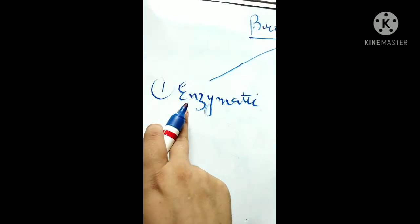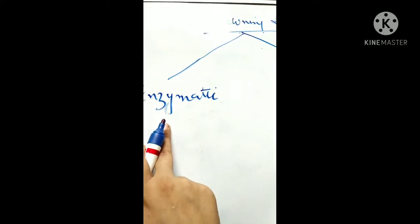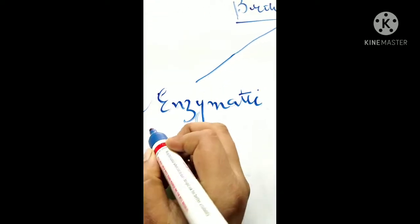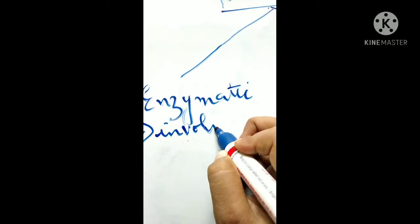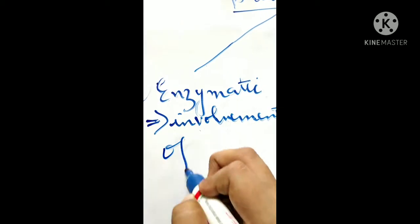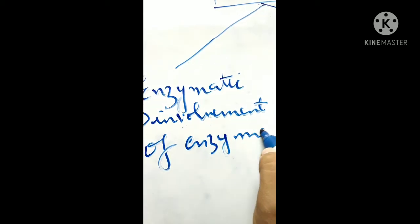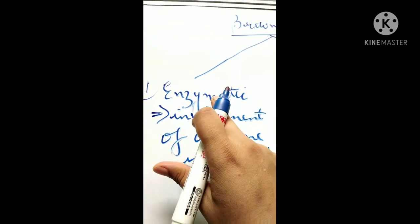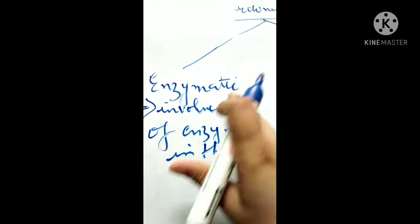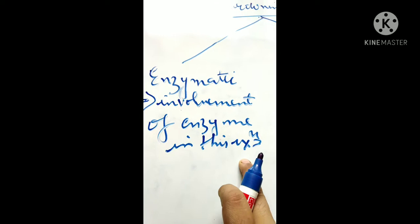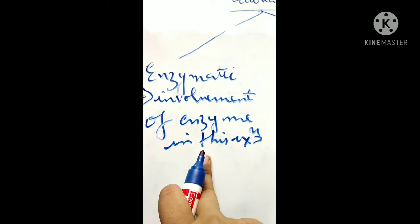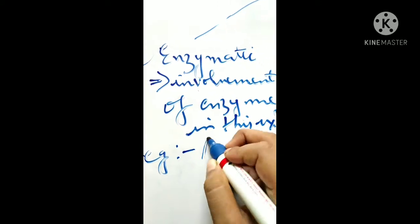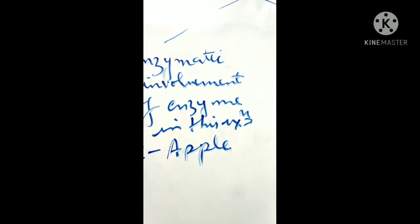Let's learn first what is enzymatic browning reaction. The word itself says that there is an involvement of enzyme in this reaction. Let us understand this with an example — I will take an example of apple, which is very common.